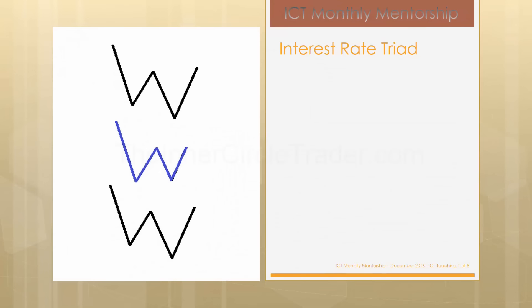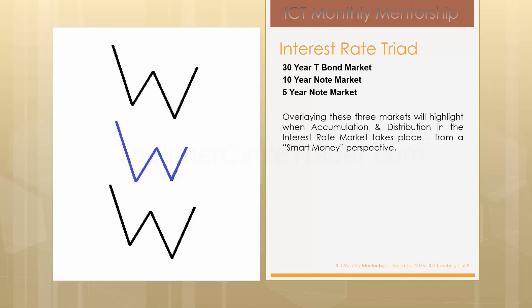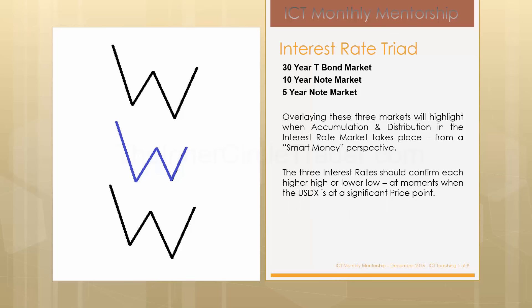Now, the interest rate triad: we start with the 30-year treasury bond market, the 10-year note, and the 5-year note. By overlaying these three markets, you'll be able to highlight when accumulation and distribution is occurring in the interest rate market. When this takes place, it represents smart money movement — how you as a trader can view smart money in the form of seeing where accumulation and buying or distribution and selling is actually occurring in the marketplace. The three interest rates should confirm each higher high or lower low at moments when the US dollar index is at a significant price point.